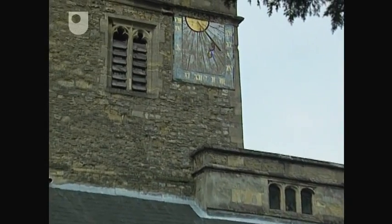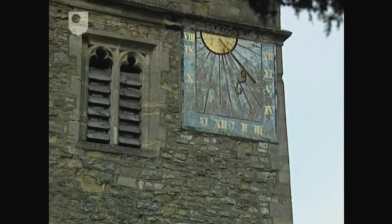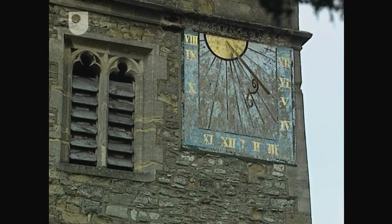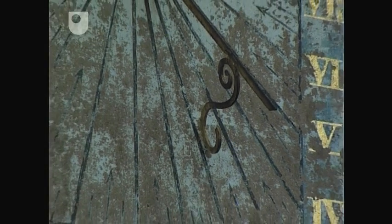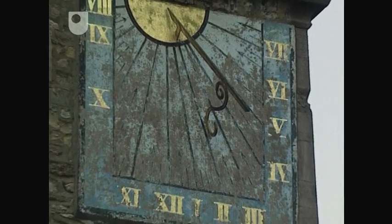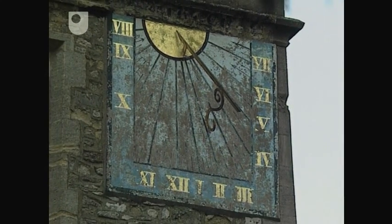Sundials are part of the traditional English landscape. The lines serve a very clear purpose. They are part of a model which records the daily passage of the sun across the sky.